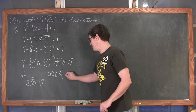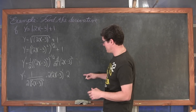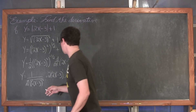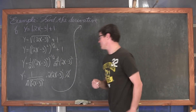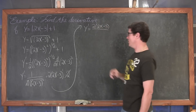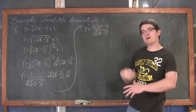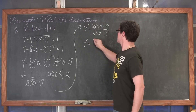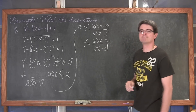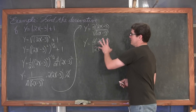The derivative of 2x minus 3 is 2. Now we have two factors of 2 in the numerator and one factor of 2 in the denominator, so one of those cancels. We end up with y prime equals 2 times 2x minus 3 over the square root of 2x minus 3 squared. Then, putting the absolute value function back in, y prime equals 2 times 2x minus 3 over the absolute value of 2x minus 3.